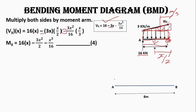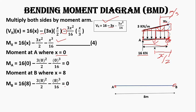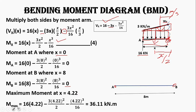We calculate the bending moment at supports A and B, and at the maximum point. At A where x = 0, the bending moment is 0. At B where x = 8 meters, substituting gives a bending moment of 0. At x = 4.22 meters where shear force is zero, the maximum bending moment is 36.11 kN·m. The bending moment diagram shows positive bending moment.